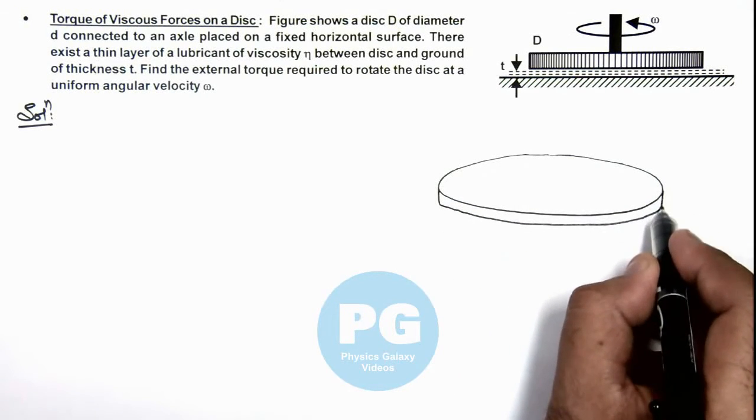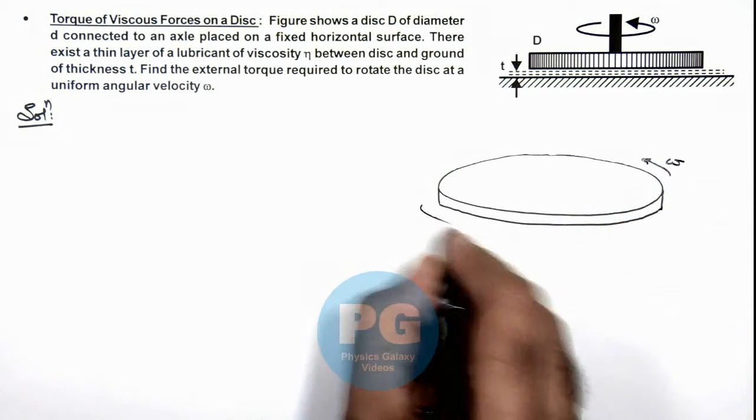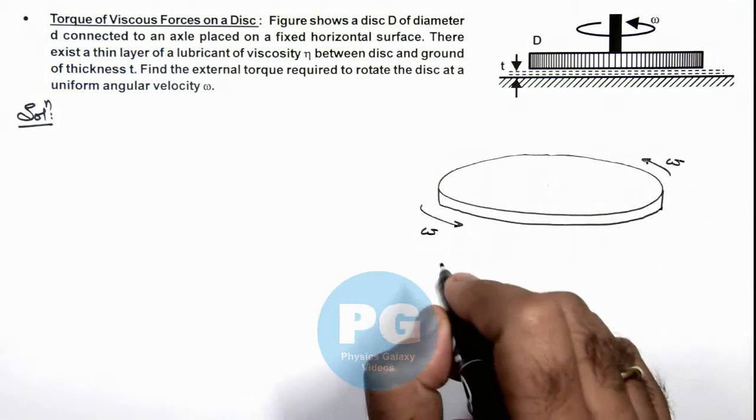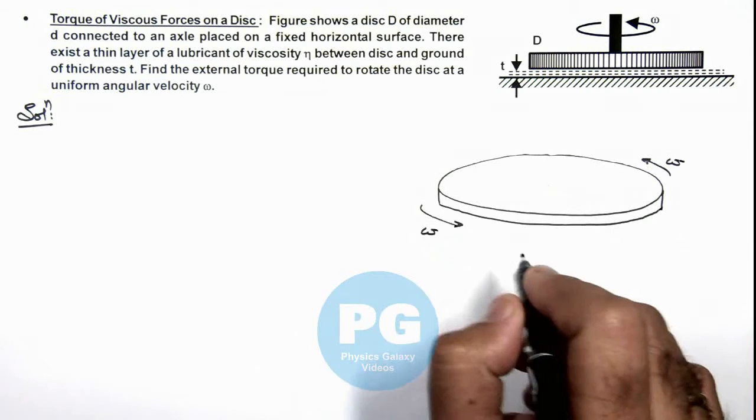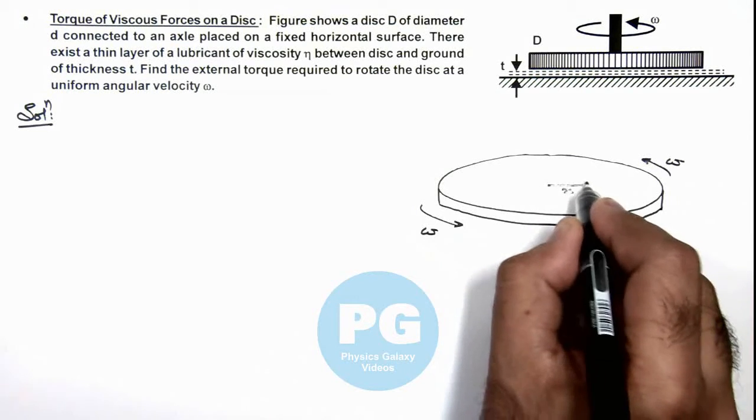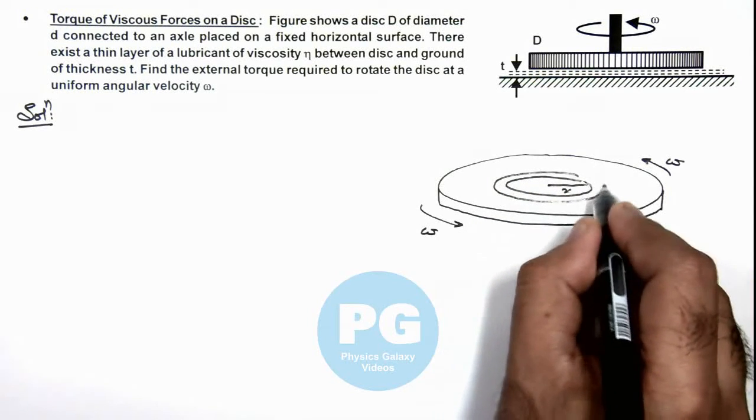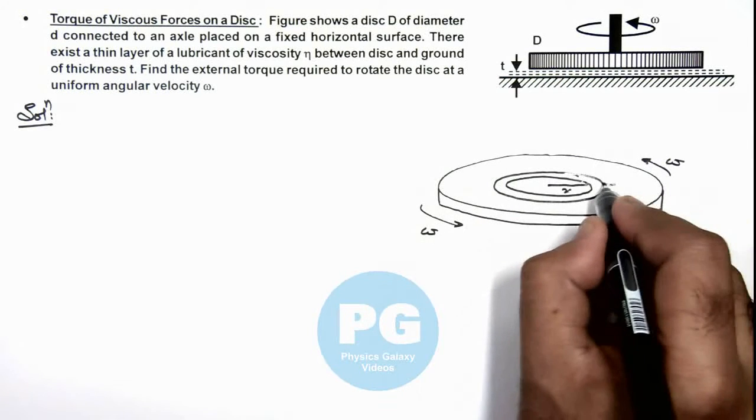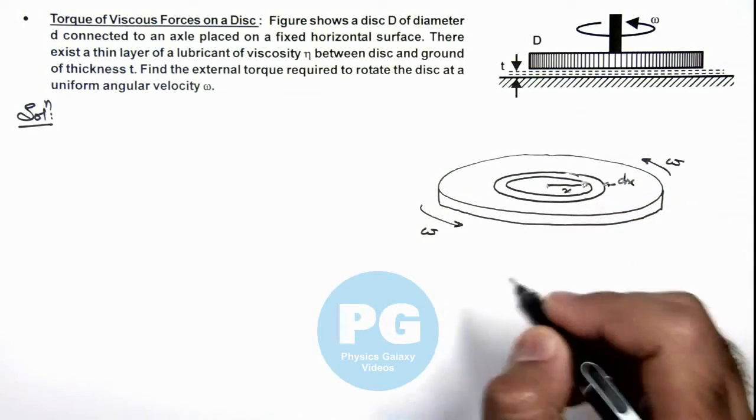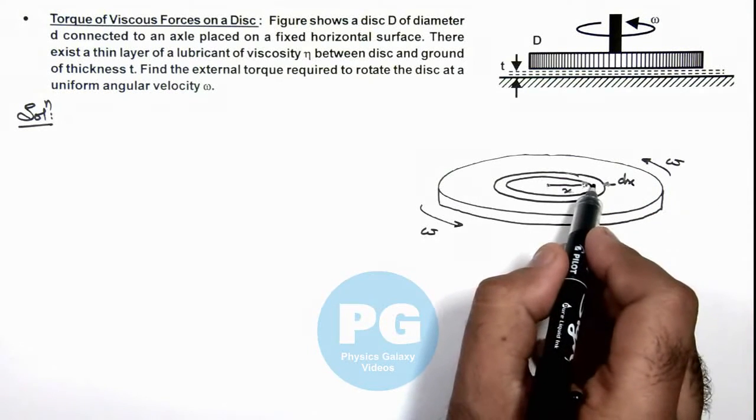If the disc is rotating at a uniform angular speed omega, then in this situation, to analyze the viscous forces we can consider an elemental strip over here on the disc, which is of width dx and radius x. If it is rotating at an angular speed omega, the velocity of this strip will be v.